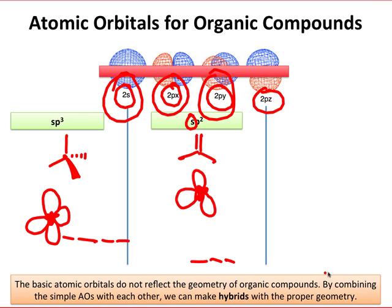Finally, the lowest energy hybrids, the sp hybrids, would be needed in cases where we would need two electron pair domains, as in an alkyne. In this case, the hybrid orbitals look like this.